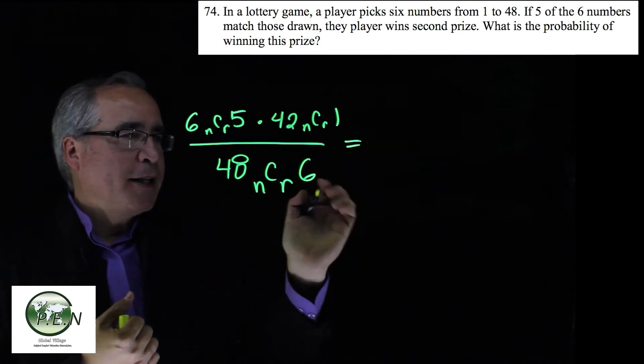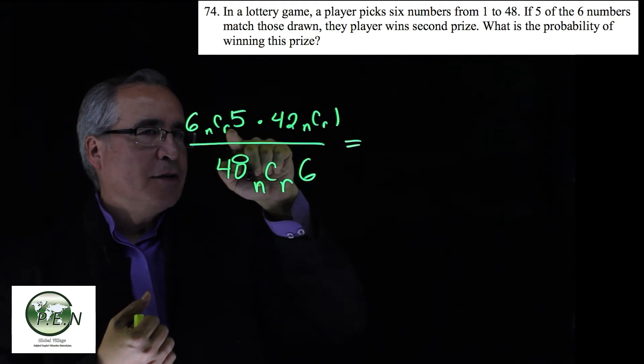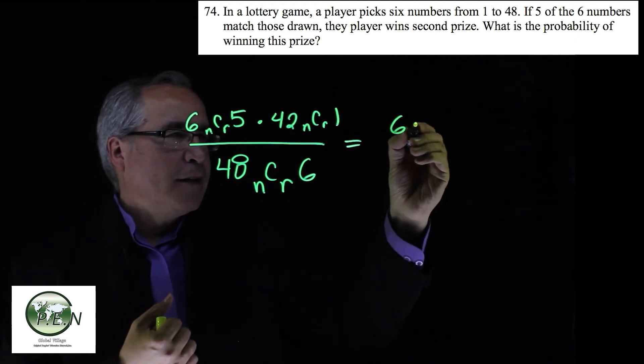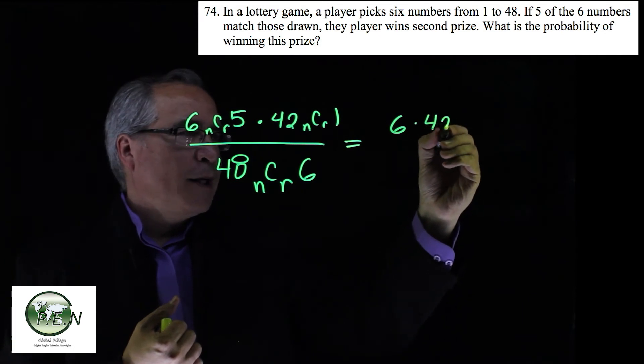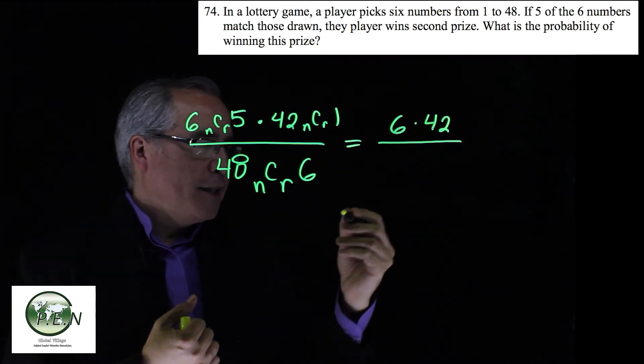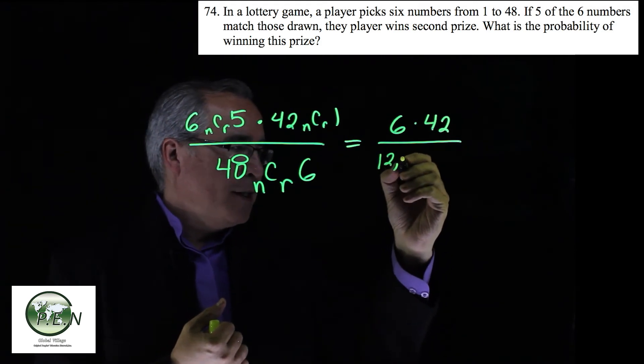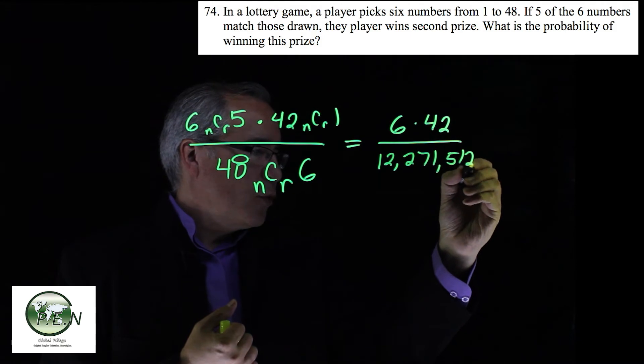So when we multiply this, we divide by that. What we get is you'll see when you do the calculation, six choosing five, you get six. When you do 42 choosing one, you get 42 ways that can happen. And then this bottom one ends up being 12,271,512.